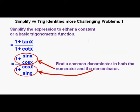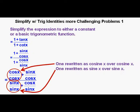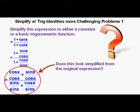Next, we'll find a common denominator in both the numerator and denominator of this big fraction. In the numerator we'll use a common denominator of cos x, and in the denominator a common denominator of sin x. We rewrite 1 in the numerator as cos x / cos x, and 1 in the denominator as sin x / sin x. Does this look simplified from the original? No — any reasonable person would say it's more complicated.